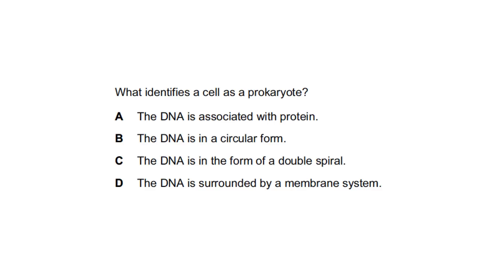What identifies a cell as a prokaryote? A. The DNA is associated with protein - this protein is histone. No, in eukaryotes only. The DNA is in circular form? Yes. The DNA is in the form of a double spiral? No. The DNA is surrounded by a membrane system, which means a nucleus? No. So the answer is B.